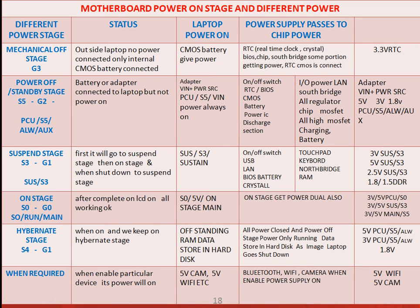On stage means when we are totally powered on. In the on stage there are three power groups active: always-on power is on, suspend power is also on, and the main on-stage power itself. All three together — the LCD and all devices are working, CPU VRM active. PCU is enabled, SUS is also enabled — the main three different power groups are all on in the on stage.